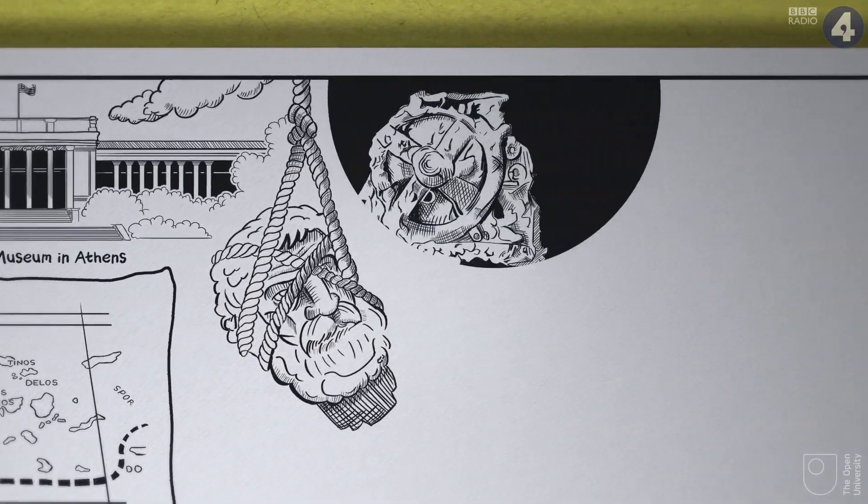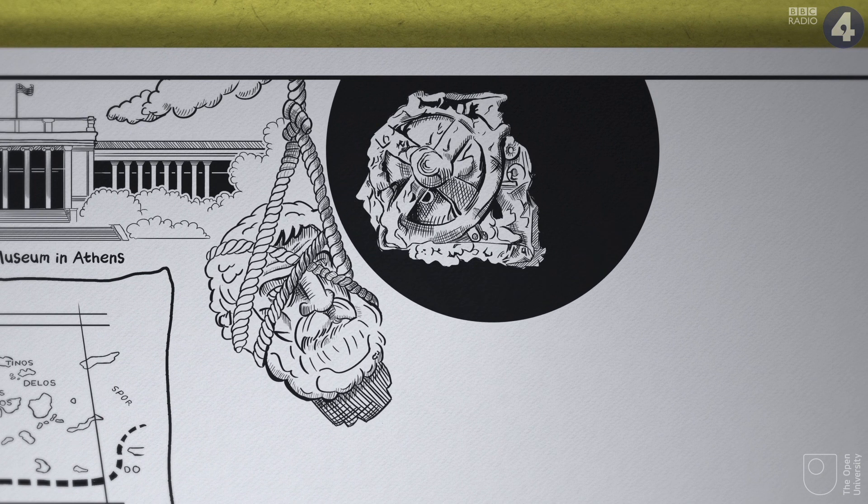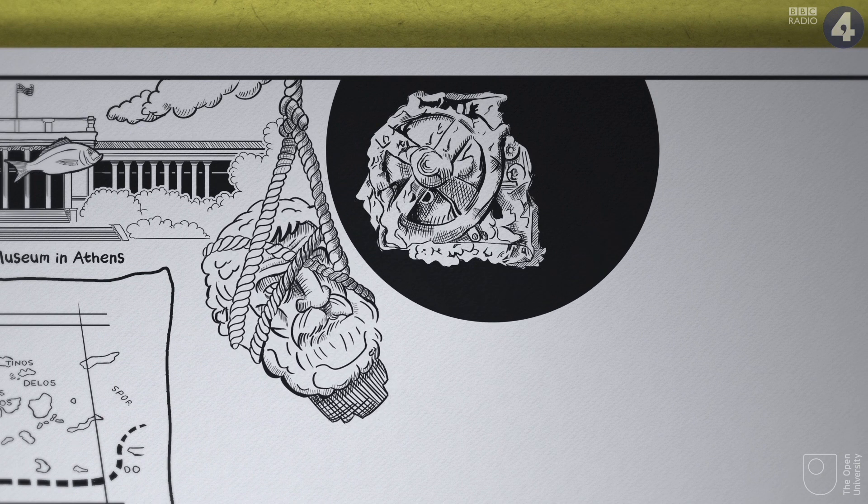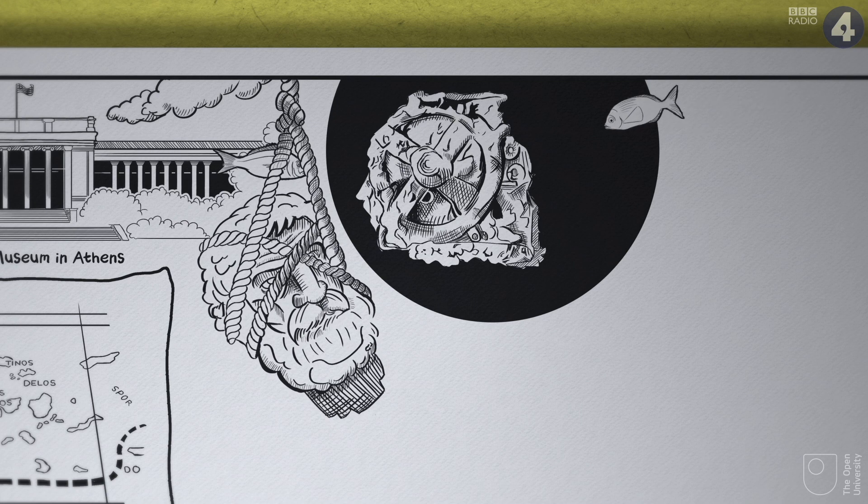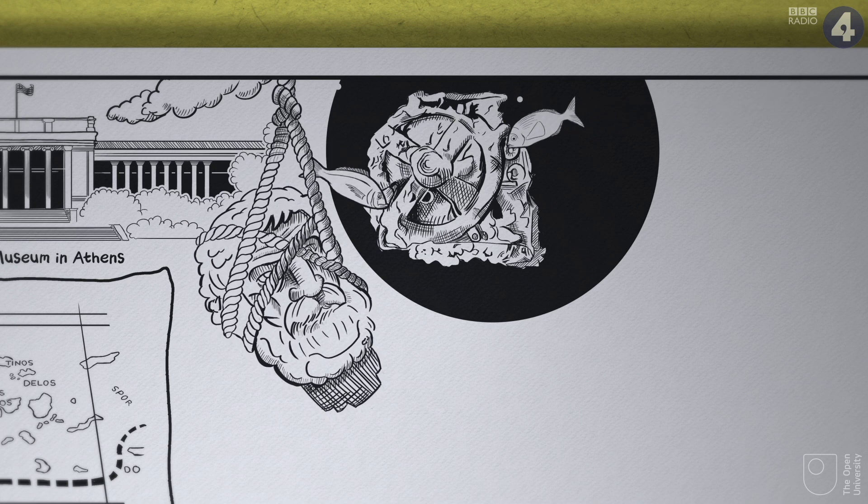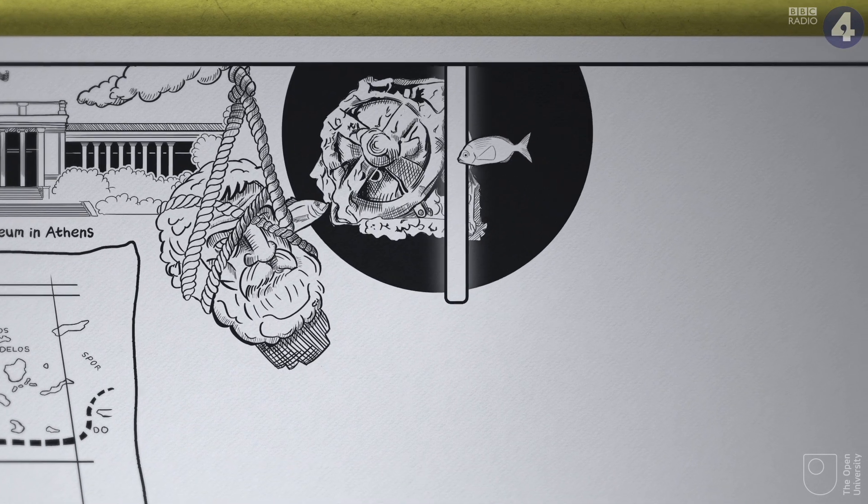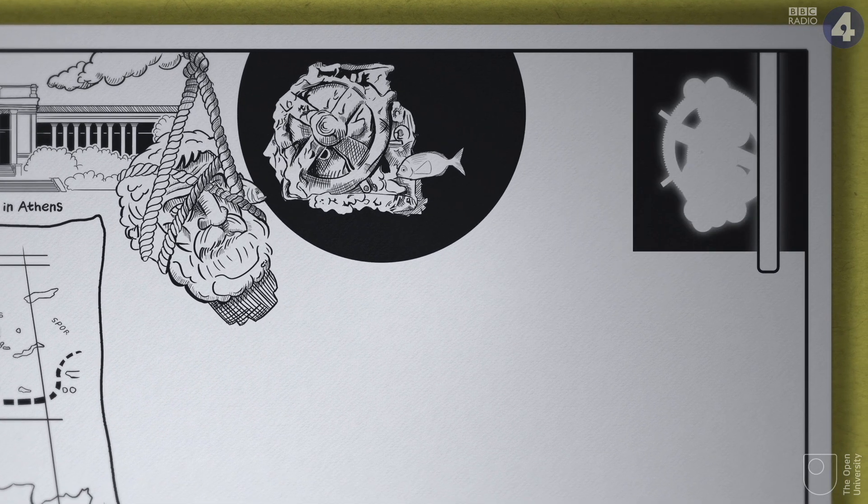Among them was a strange lump of bronze and decayed wood the size of a shoebox, almost completely encrusted with limestone. This turned out to be one of the most astounding archaeological finds ever.